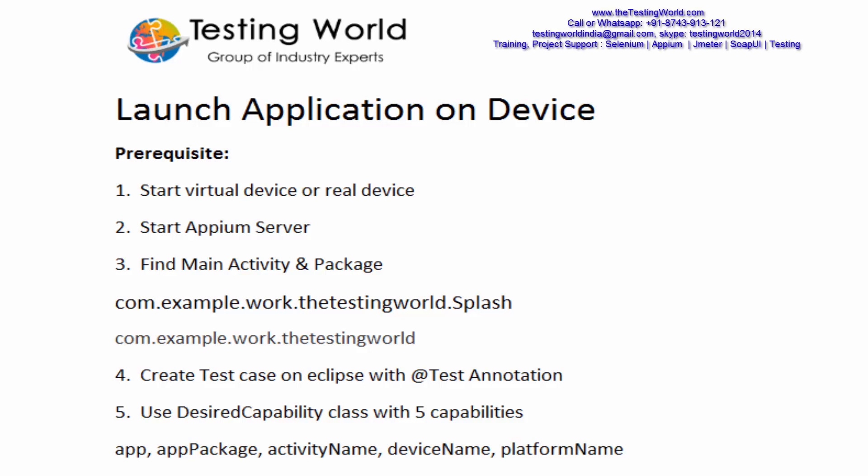Welcome to the testing world. In this session, we are going to launch an application on my virtual device. We can understand that while automation, first we are going to install that application on the device, then we are going to trigger or launch the application on the device, and then my automation script will execute on that. The aim of this session is to launch an application on the device.